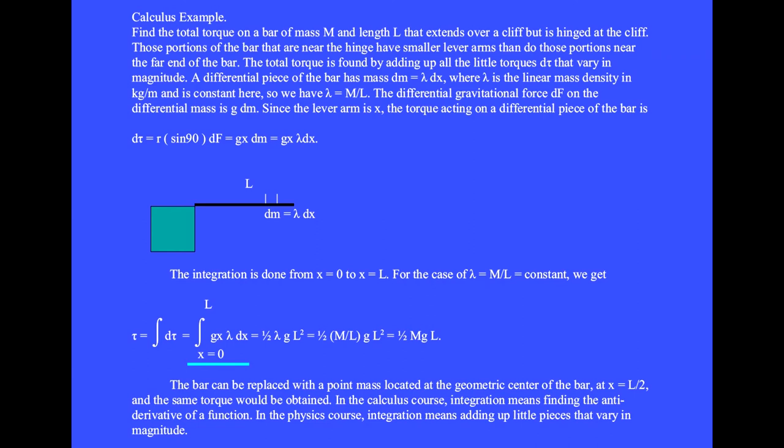We integrate from x equals 0 to L, gx times lambda dx. In the homework problems, lambda is a given function of x. With lambda constant this time, we get the total torque is one half MgL.